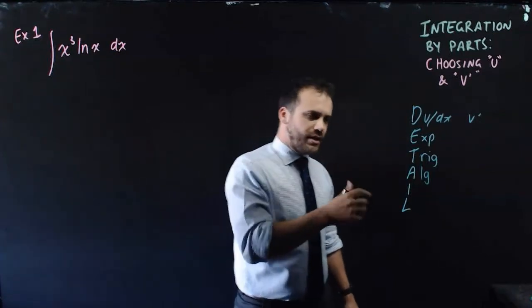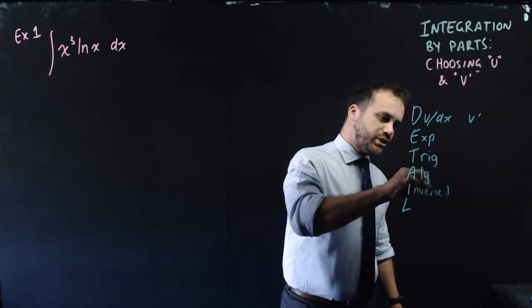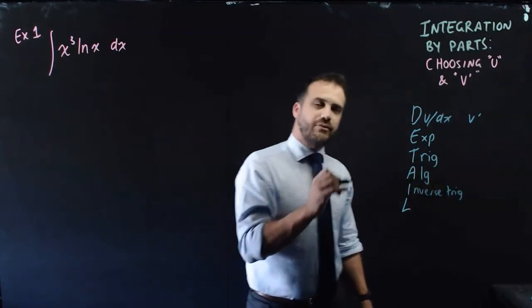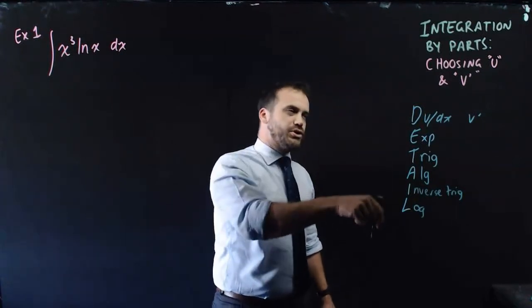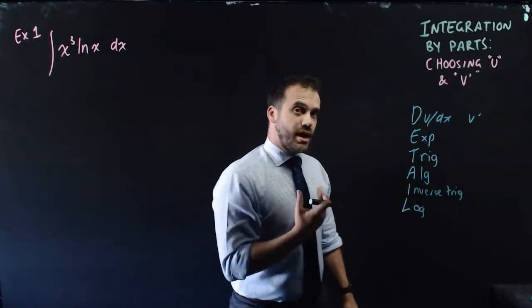Now if you don't have that, try an inverse trig function. And if you don't have one of those in there, try a log function. This is the order in which you should decide whether you're going to have a v dash.